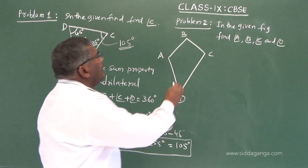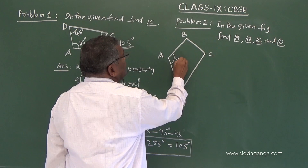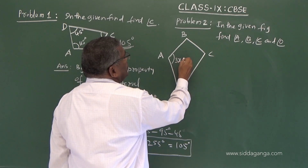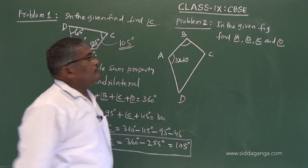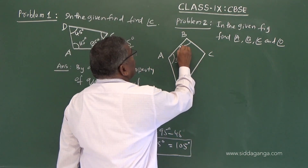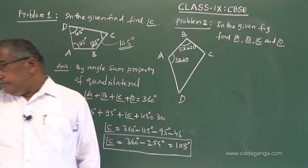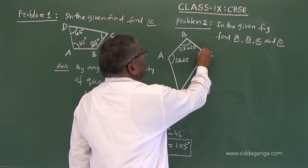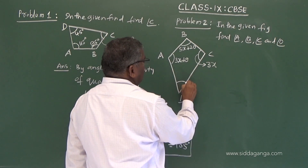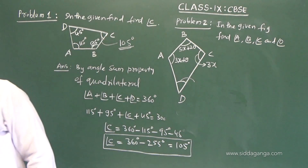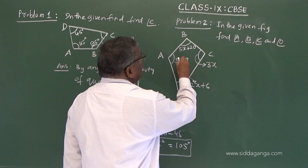The angle values given are: angle A is 3x plus 9, angle B is 5x plus 20, angle C is 3x, and angle D is 2x plus 6. These are angle values, not side lengths.